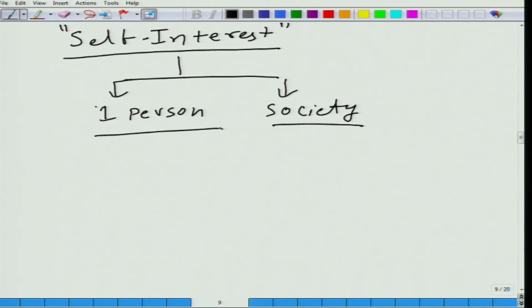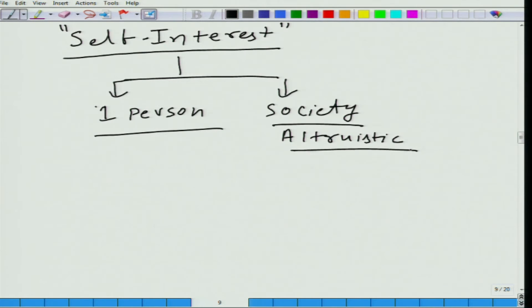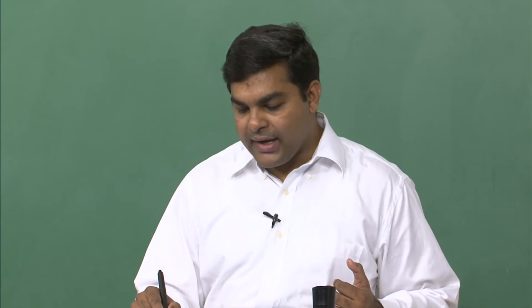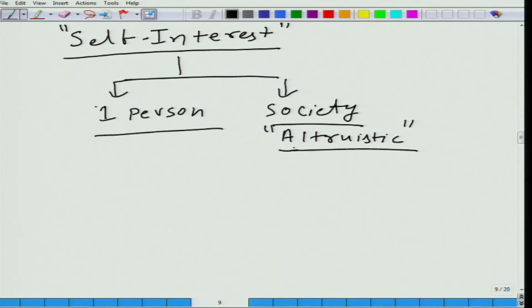When you care for society you become altruistic. But this also fits here — we can use it to say this is what you want to do. If you want to do well for the society, that is what you would like to do. Here we are completely silent about how you have reached to this assumption, but we take this assumption as given.